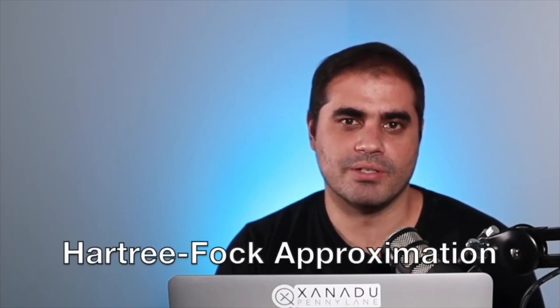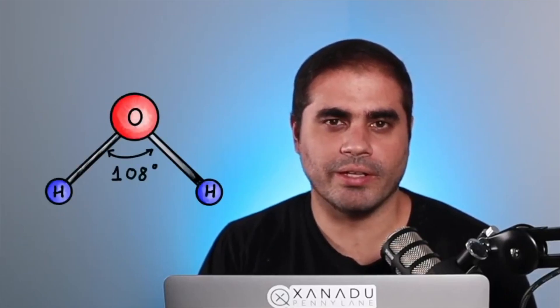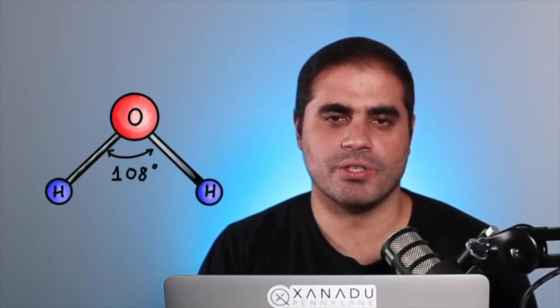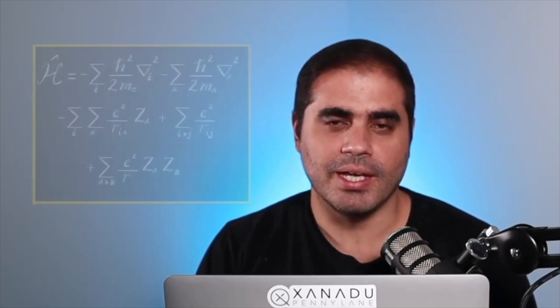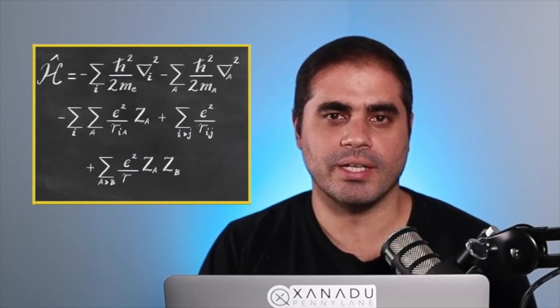The approximation that we do in the case of molecules is known as the Hartree-Fock approximation. Hartree-Fock does two things for us. First, it calculates the molecular geometry, so the positions of where the atomic nuclei are. And with this information, it can do the second thing, which is calculating the Hamiltonian.